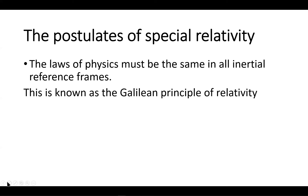This is known as the Galilean principle of relativity because Galileo proposed this idea. He talked about doing experiments on the hold of a ship moving through calm waters, imagining a wineskin with a leak at the bottom. To a person on the ship, the drops would appear to fall straight down as if the ship were at rest. He was the first to think about these things.